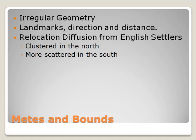In the north, metes and bounds are very clustered because northern communities tended to have less large agricultural holdings. In the south, the metes and bounds settlements or land partitioning seemed to cover larger areas of land because there were more developed and larger agricultural plots.